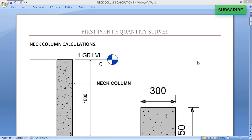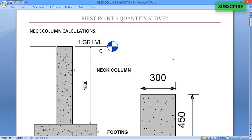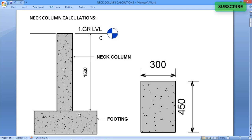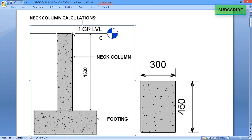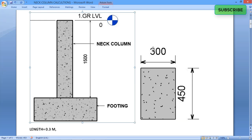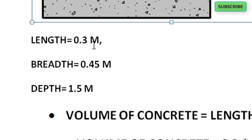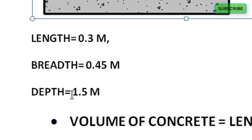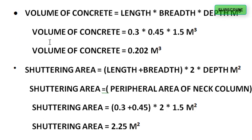Hello friends, today in this tutorial we are going to learn how to calculate neck column quantities. To calculate neck column quantities, first we have to understand what a neck column is. A neck column is a column which starts from the footing and ends at the ground level. The depth of our neck column is 1500 mm, and from the top we have length 0.3 m and breadth 0.45 m.